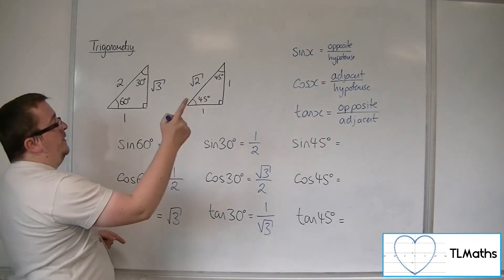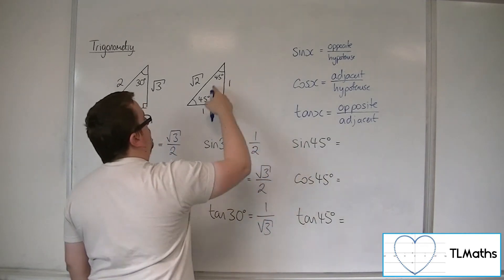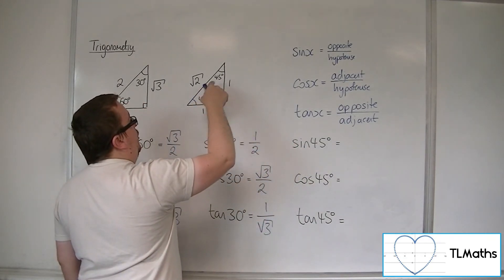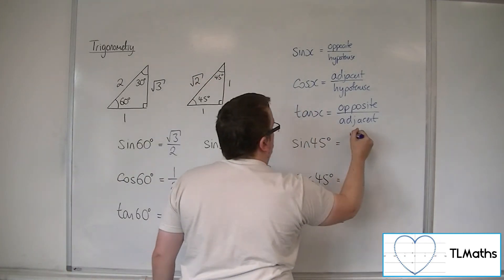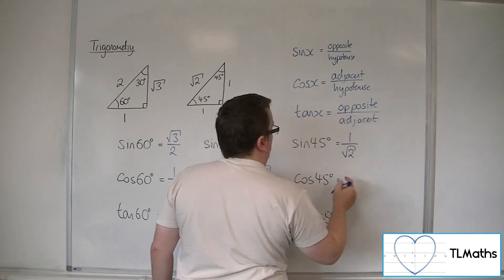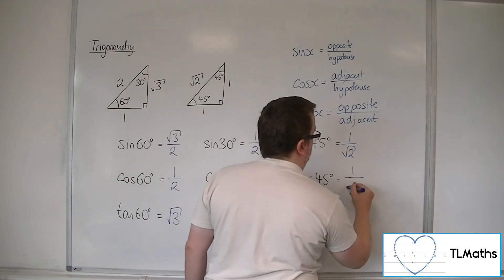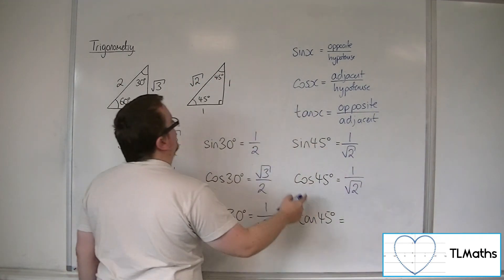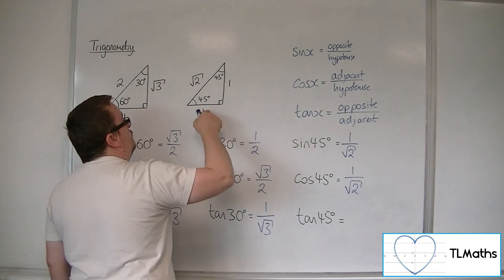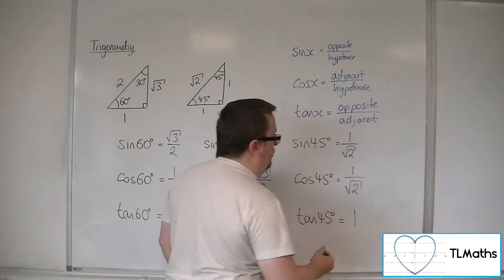And then finally, sine of 45, using either of those two, sine is opposite over hypotenuse, so 1 over root 2. Cosine of 45 is adjacent over hypotenuse, so 1 over root 2 as well. And tan of 45 is opposite over adjacent, so 1 over 1, which is 1.